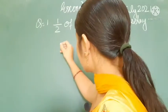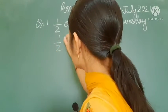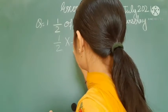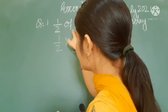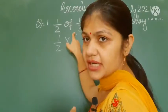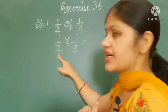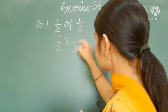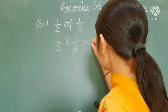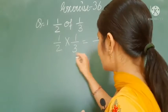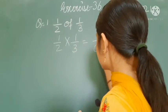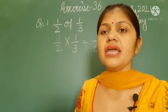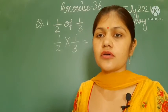We can write 1 by 2 of 1 by 3 as 1 by 2 multiplied by 1 by 3. Numerator multiplied with numerator, denominator multiplied with denominator: 1 × 1 is 1, and 2 × 3 is 6. So the answer is 1 by 6.